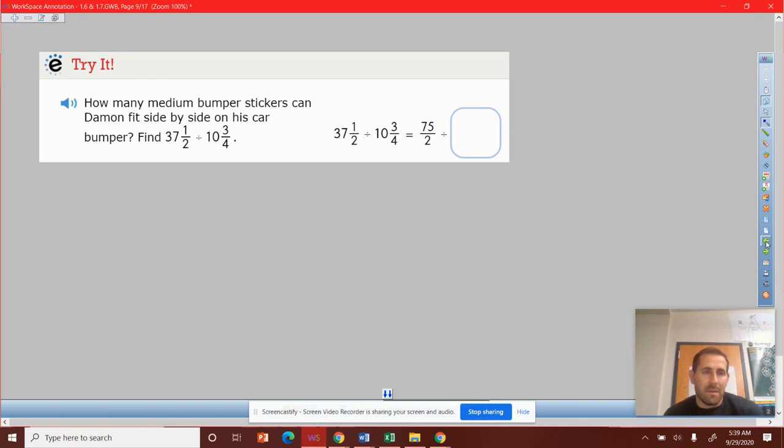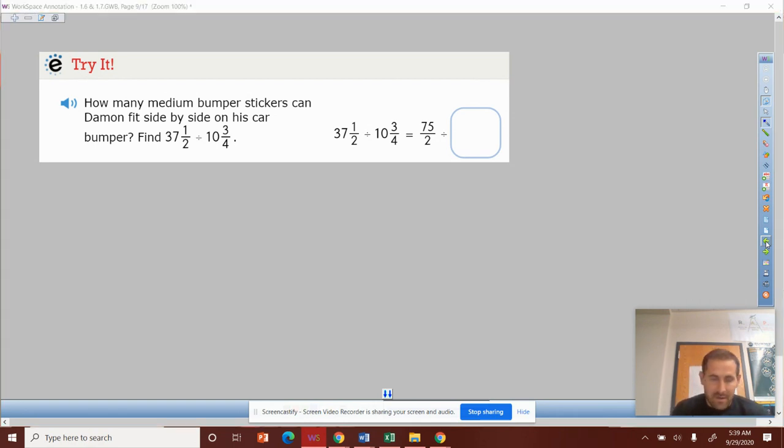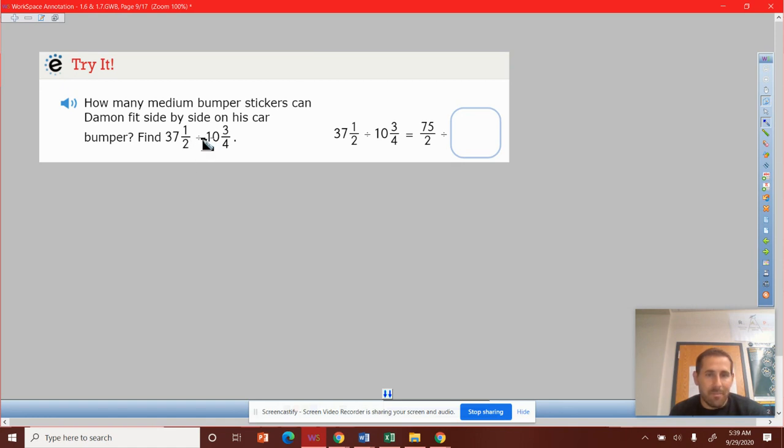How many medium bumper stickers can Damon fit side by side on his car? So the medium bumper sticker is 10 and three-fourths. He still has a bumper that's 37 and a half, so we're doing the same type of problem. You can see some of this has started.